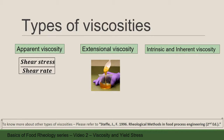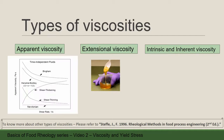Here I introduce you to apparent, extensional, intrinsic, and inherent viscosity. Apparent viscosity is shear stress divided by shear rate. It means a single viscosity value at a shear rate value. By looking at the graph, for Newtonian fluid, apparent viscosity is the same as Newtonian viscosity, and it is constant with the increasing shear rate.